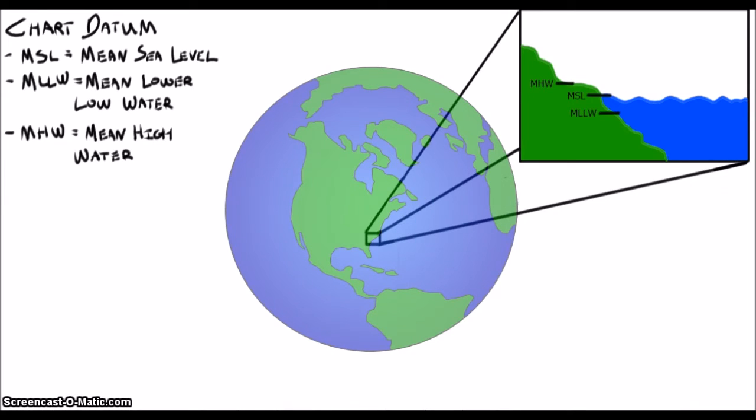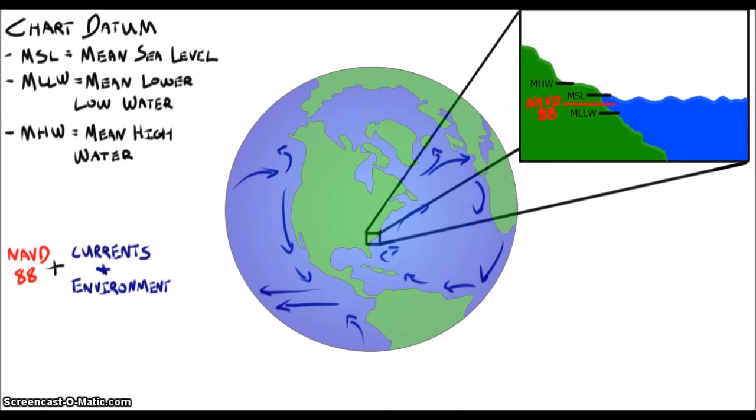Well, it turns out to be pretty close, but persistent currents and atmospheric effects can hold up some of those piles of water, so mean sea level isn't really flat with respect to gravity. This difference is called the topography of the sea surface.